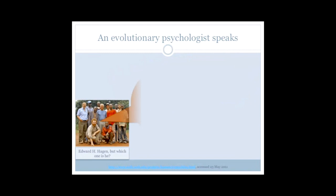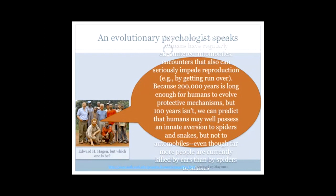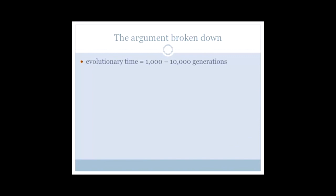Humans have regularly encountered automobiles. Encounters that also can seriously impede reproduction, e.g. by getting run over. Because 200,000 years is long enough for humans to evolve protective mechanisms, but 100 years isn't, we can predict that humans may well possess an innate aversion to spiders and snakes, but not to automobiles. Even though far more people are currently killed by cars than by spiders or snakes, the adaptive mind cannot cope with automobiles. It hasn't had time to cope with cars.